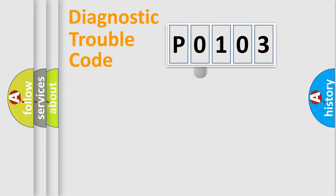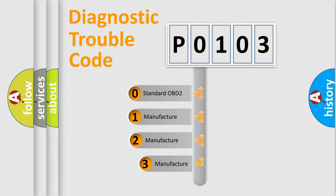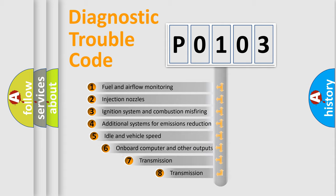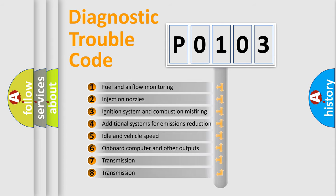This distribution is defined in the first character code. If the second character is expressed as zero, it is a standardized error. In the case of numbers 1, 2, or 3, it is a manufacturer-specific error. The third character specifies a subset of errors.